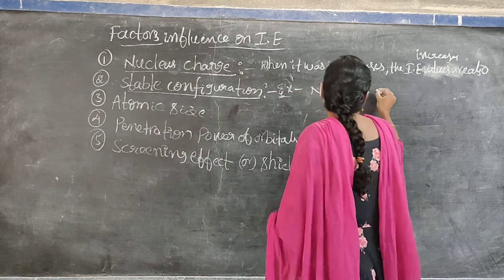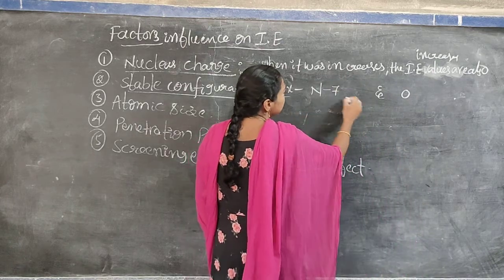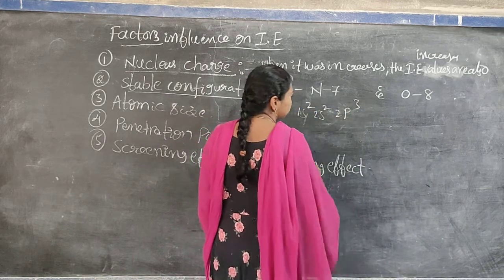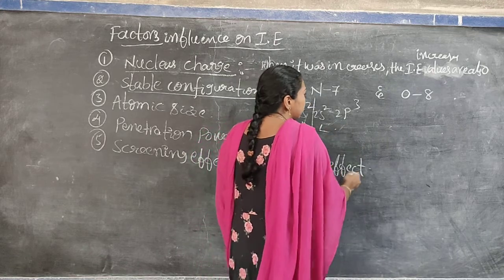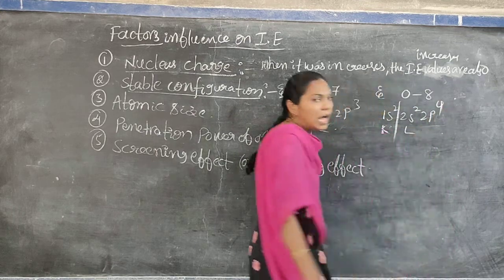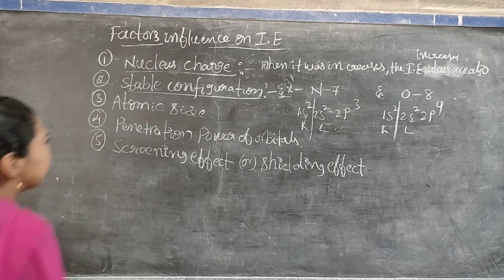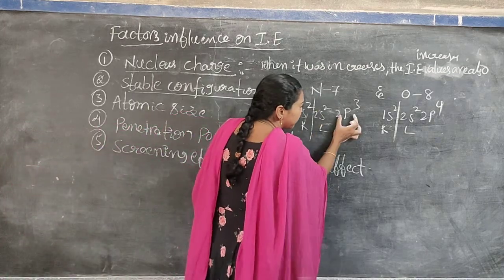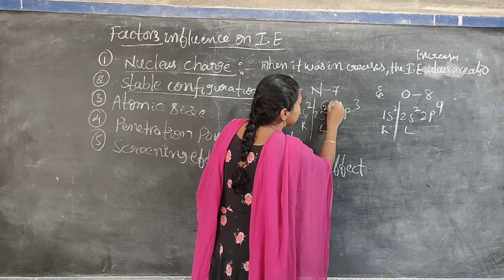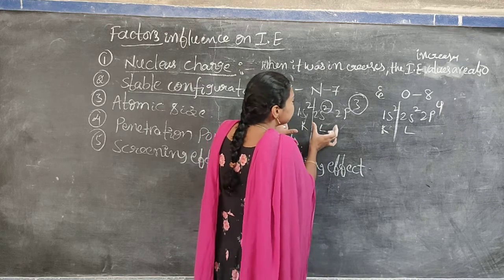For example, Nitrogen (atomic number 7) has the configuration 1s2, 2s2, 2p3, while Oxygen (atomic number 8) has 1s2, 2s2, 2p4. In Nitrogen, the 2p orbital is half-filled and the 2s orbital is fully filled — this is a stable configuration. In Oxygen, the 2p orbital is neither half-filled nor fully filled — so it is an unstable configuration.